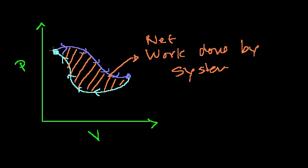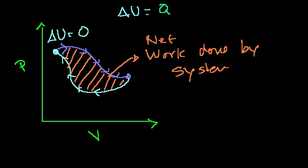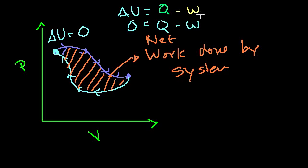Our internal energy is also the same as it was before. So our change in internal energy over this path — you're going to have a different internal energy at different points, but when you go around the circle and come back, your change in internal energy is equal to 0. And we know that change in internal energy, from the first law of thermodynamics, equals the heat added to the system minus the work done by the system. So on a closed loop, delta U = 0, which means heat applied equals work done.